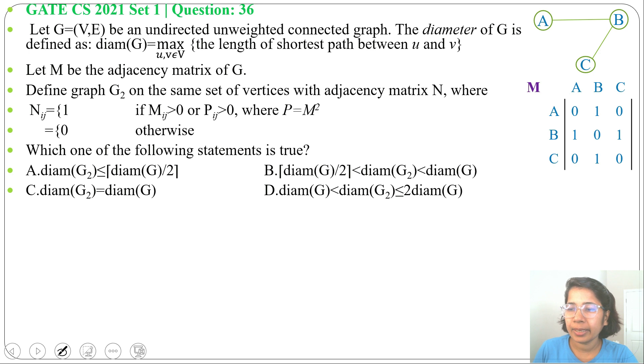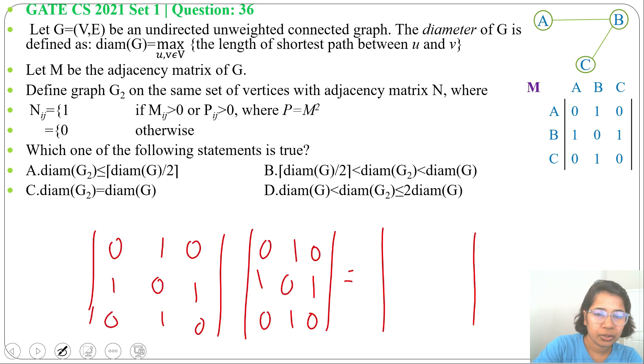Next we'll find M squared. For M squared, we need to multiply M with M. First row with first column, it will be 1. Then first row with second column, 0 multiplication 1 will be 0, 1 multiplication 0 will be 0, 0 multiplication 1 will be 0, so it will be 0. Then first row, third column, it will be 1. 0 multiplication 0 plus 1 multiplication 1 plus 0 multiplication 0. Due to this, we'll get 1.